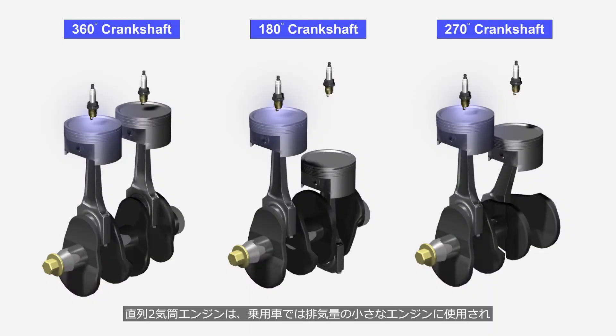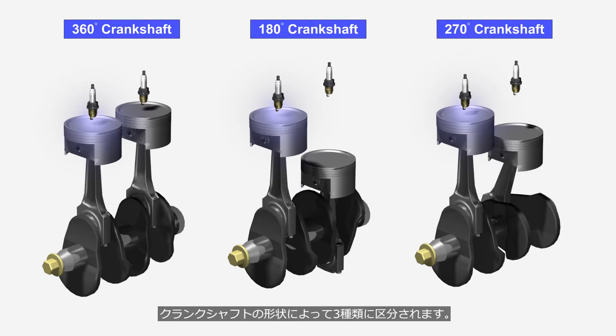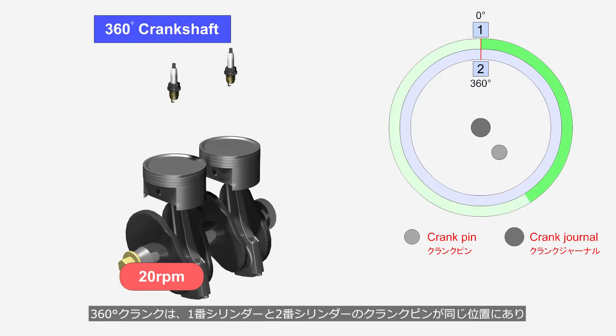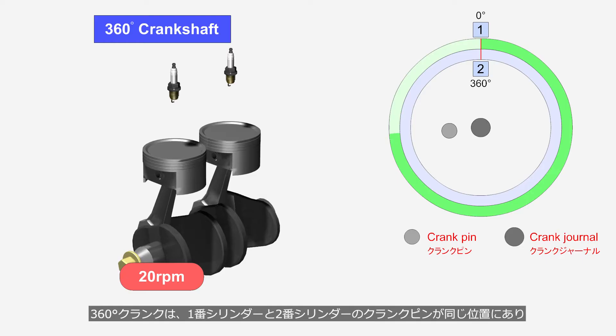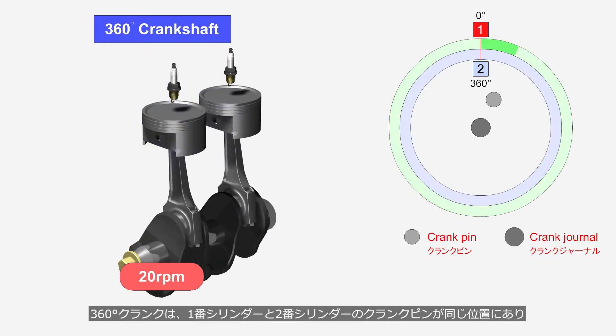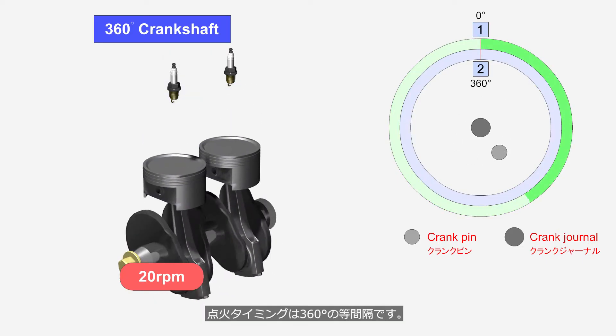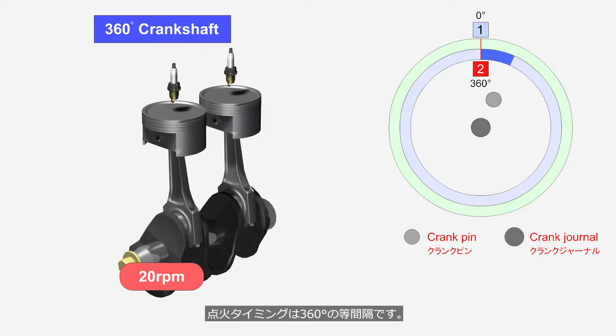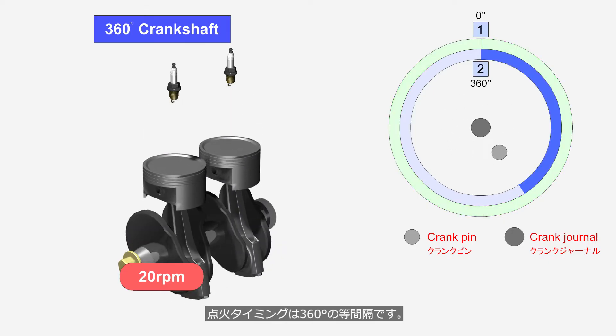Parallel twin engines are used in small displacement engines for passenger cars, and are one of the most popular cylinder layouts in motorcycles. They are classified into three types based on the shape of the crankshaft. A 360 degrees crankshaft has the crankpins for the first and second cylinders in the same position, resulting in an even firing interval of 360 degrees.